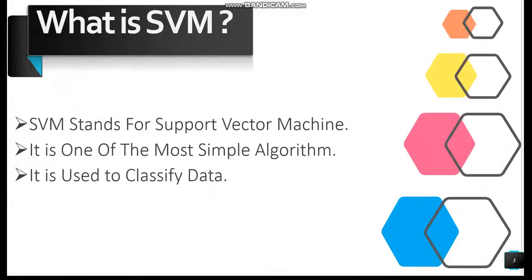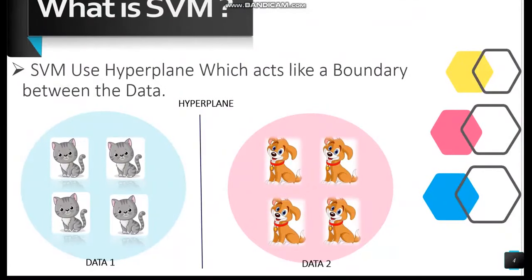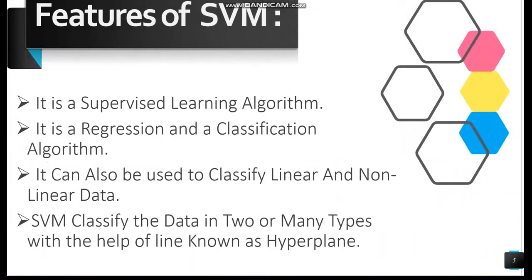Our last type of supervised learning algorithm is SVM, which stands for Support Vector Machine. It is one of the most common classification algorithms used to classify data. Support Vector Machine uses hyperplanes, which act like boundaries to distinguish between data classes. SVM can separate data divided into segments where each segment contains only one kind of data. It is a supervised learning algorithm, and there is also a Support Vector Regressor used for regression. SVM can classify both non-linear and linear data using a boundary line called a hyperplane.